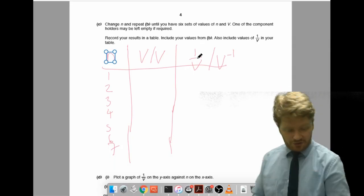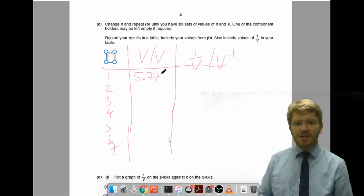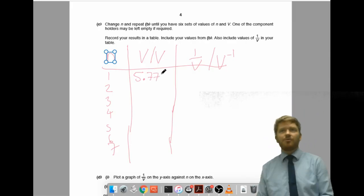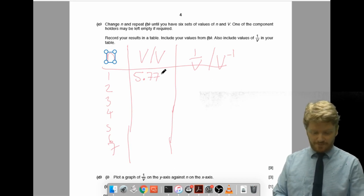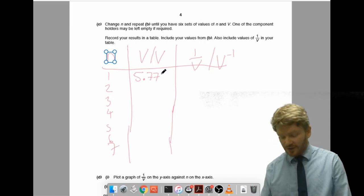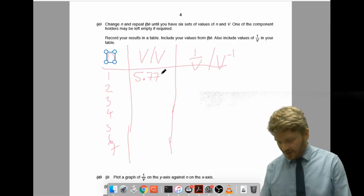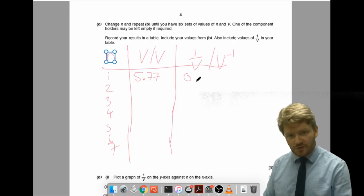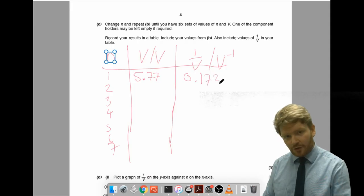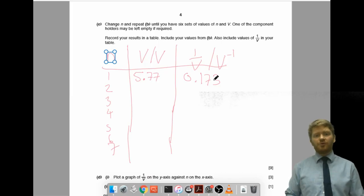So, in my table, I'm going to just write down 5.77. Really important here to record the same number of significant figures as in your readings. So, as in your instruments. I also need to compute 1 over V. So, hopefully, you're not going to find that too difficult. 1 divided by 5.77. That comes to 0.173. And you'll notice I've given it to the same number of significant figures as my reading. Always record to the same number of significant figures as your reading.